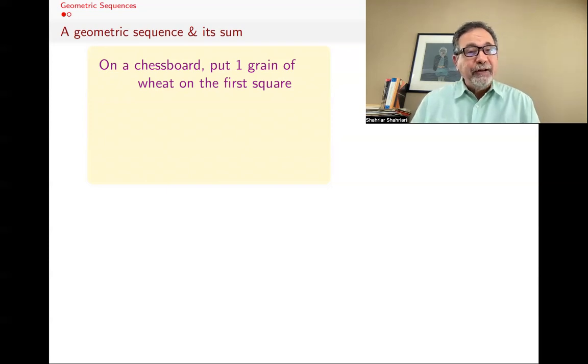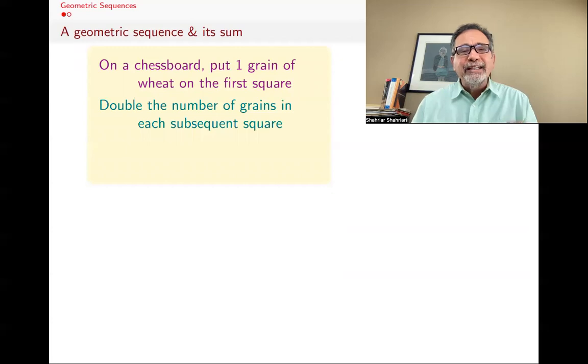The story goes that the person who invented chess presented it to the prince in India and the prince was so excited with this game that he asked the guy, whatever prize you want, name it. And the inventor said that all I want is just give me one grain of wheat on the first square. And then after that, double the number of grains in each subsequent square.